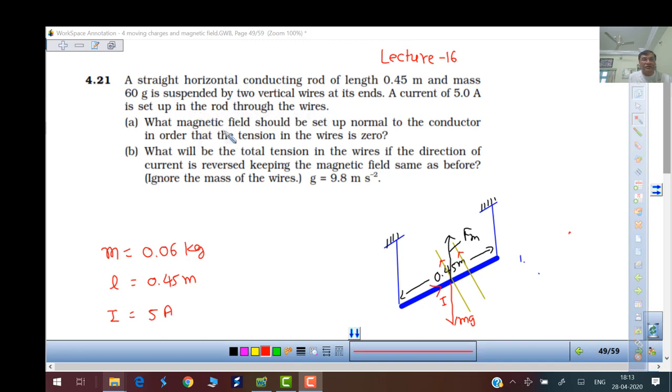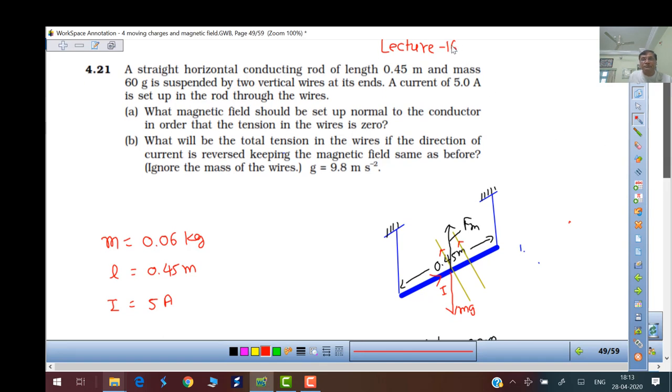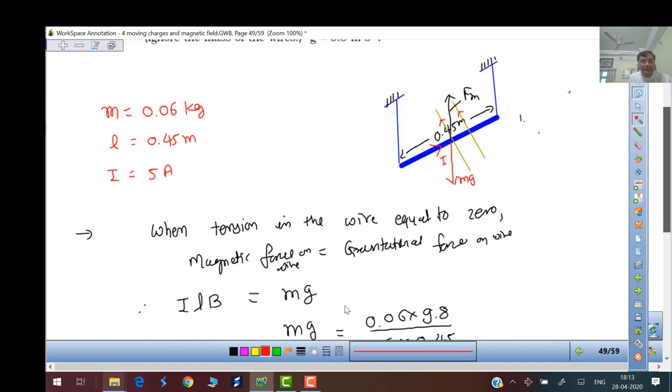What is the magnetic field that should be set up normal to the conductor in order that tension in the wire is zero? So mass has force mg downward. Apply a magnetic force upward to make tension zero. This magnetic force ILB is equal to mg. So when tension in the wire equals zero, magnetic force on the wire equals gravitational force on the wire.